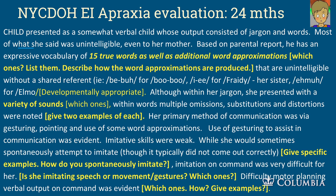Here's a lot of language on a slide, but I'll walk you through it. This was a New York City Department of Health EI apraxia evaluation — I've read many of these and each one makes me sad. The child presented as a somewhat verbal child whose output consisted of jargon and words, most of which was unintelligible even to her mom. Based on parent report, she has an expressive vocabulary of 15 true words as well as additional word approximations. Which ones? List them. How is a word approximation different from a true word at 24 months? Is it 'ba' for bottle? 'Ka' for car? Those are true words. That's developmentally appropriate and doesn't worry me at all with a 24-month-old.